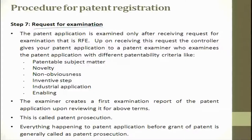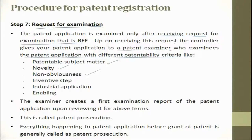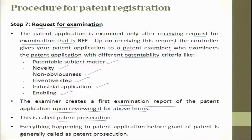Request for examination: the patent application is examined only after receiving the request for examination, that is RFE. Upon receiving this request, the controller gives your patent application to the patent examiner, who examines it with different patentable criteria like patentable subject matter, novelty, non-obvious, innovative step, industrial application, and enabling. If the examiner gives a clear go-ahead, then you file a patent. The examiner creates a first examination report upon reviewing the application. Everything that happens to a patent application before granting of the patent is generally called patent prosecution.